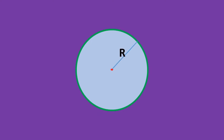Here, the circle is filled with blue color. Any point in purple color is considered as outside the circle. Consider R as the radius of the circle, as indicated by the line drawn from the center of the circle to its circumference. The coordinates of the center of the circle are represented as Cx and Cy. The green color point placed inside the circle — the line drawn from the center coordinates Cx and Cy to the green color point is shorter than the radius R, which implies the point is within the circle.